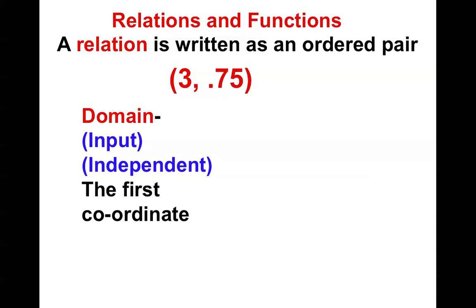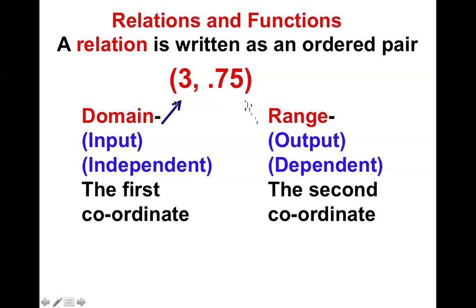In these ordered pairs, we have a lot of different names. The first value is called the x-coordinate, but it's also called the domain, the input, the independent variable, and the first coordinate. The other side is known as the range, the output, the dependent variable, and the second coordinate. There are lots of fancy words that mean easy things, but basically these are our x and our y values.